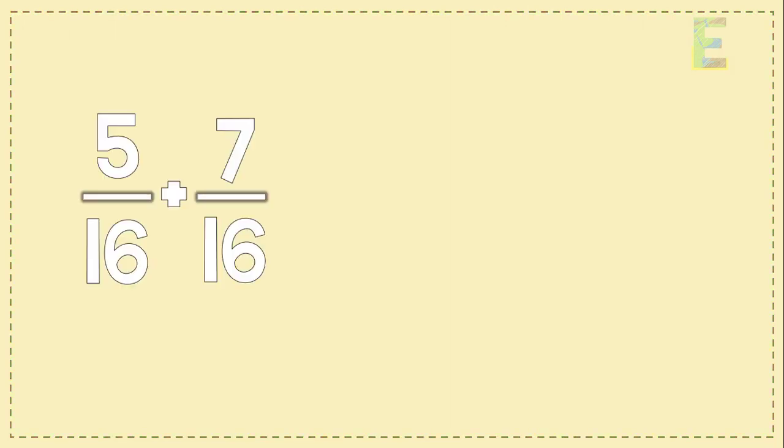And that makes sense because if we add 1 half plus 1 half we can get a whole. Now let's have another example: 5 over 16 plus 7 over 16.